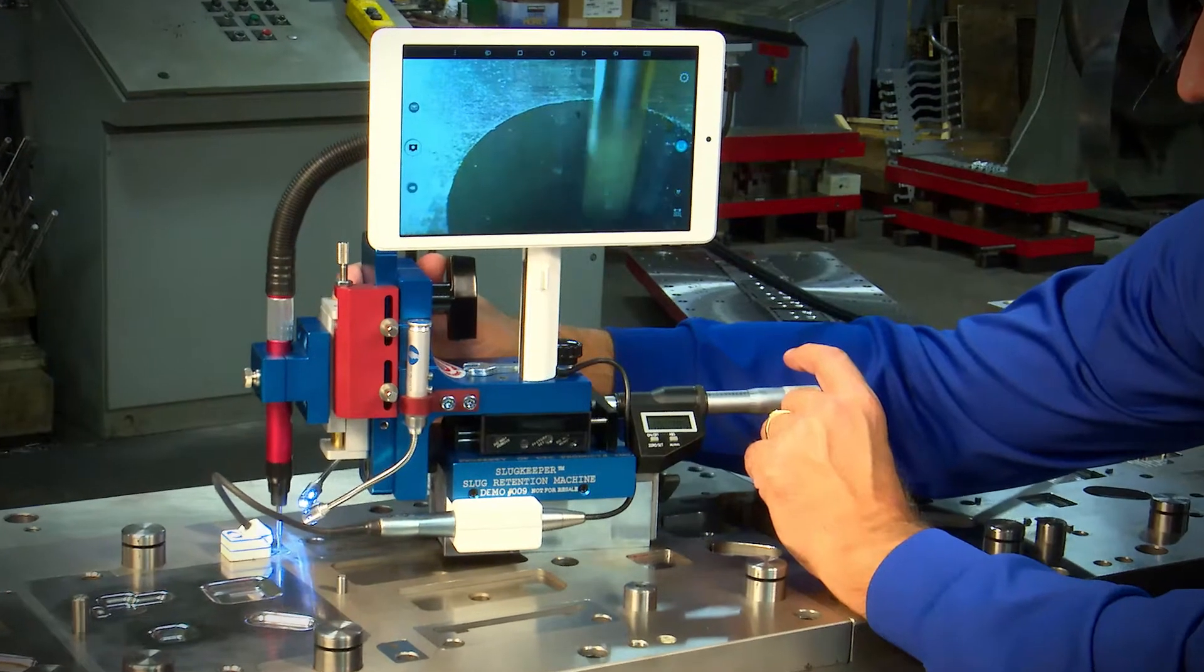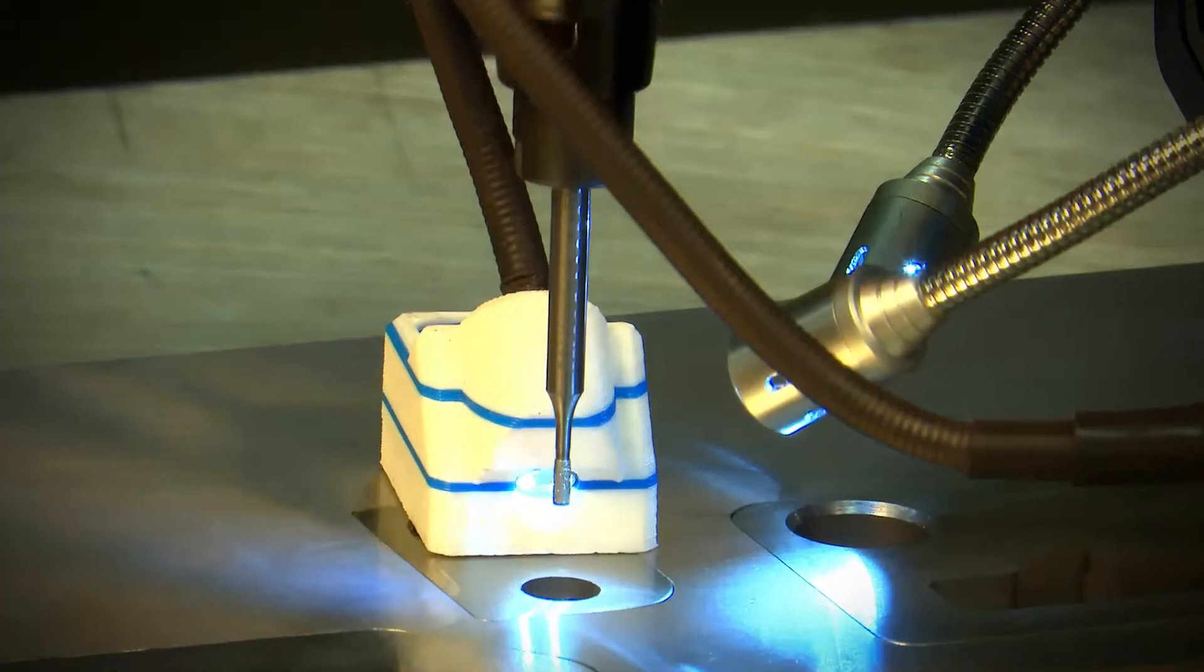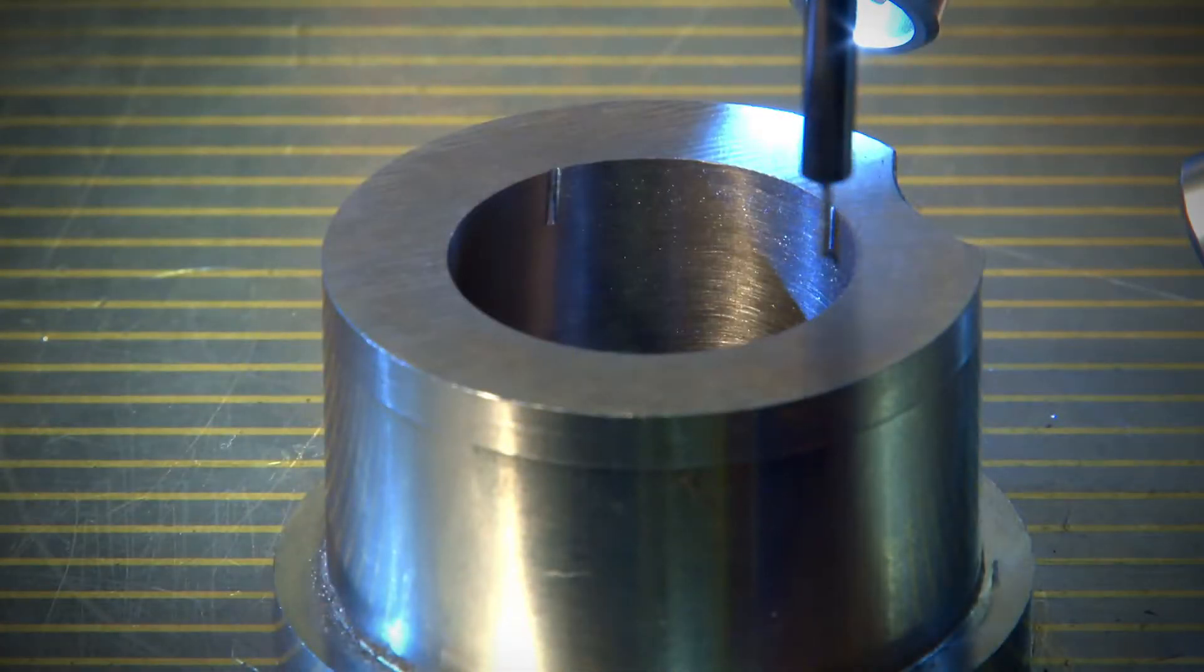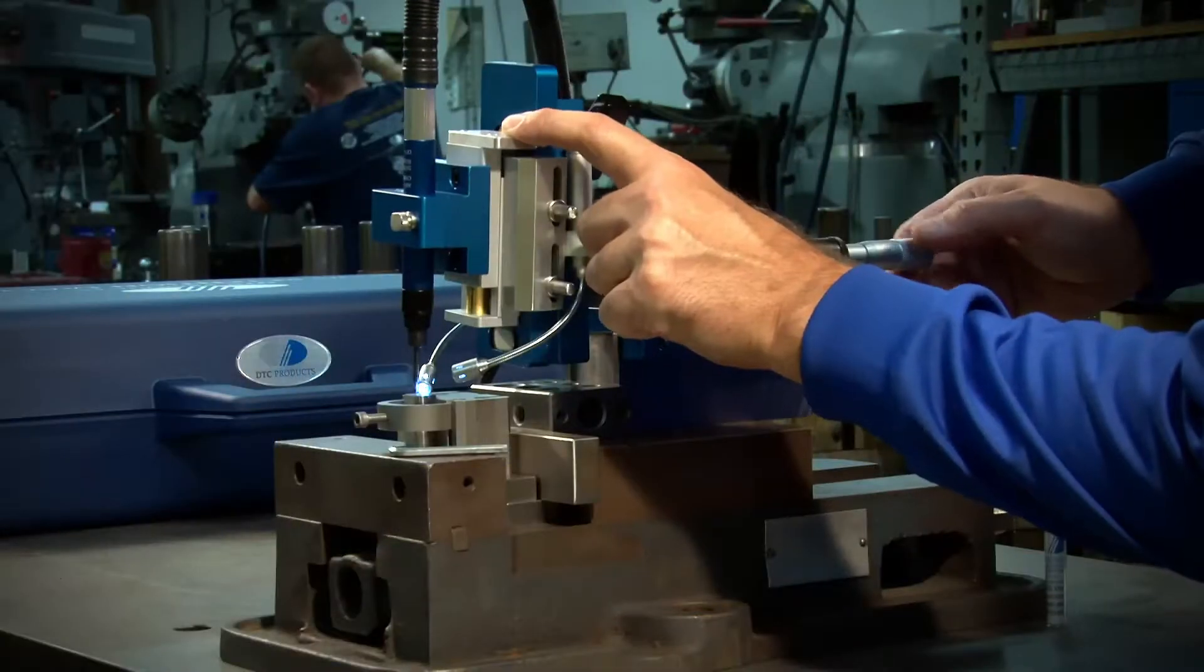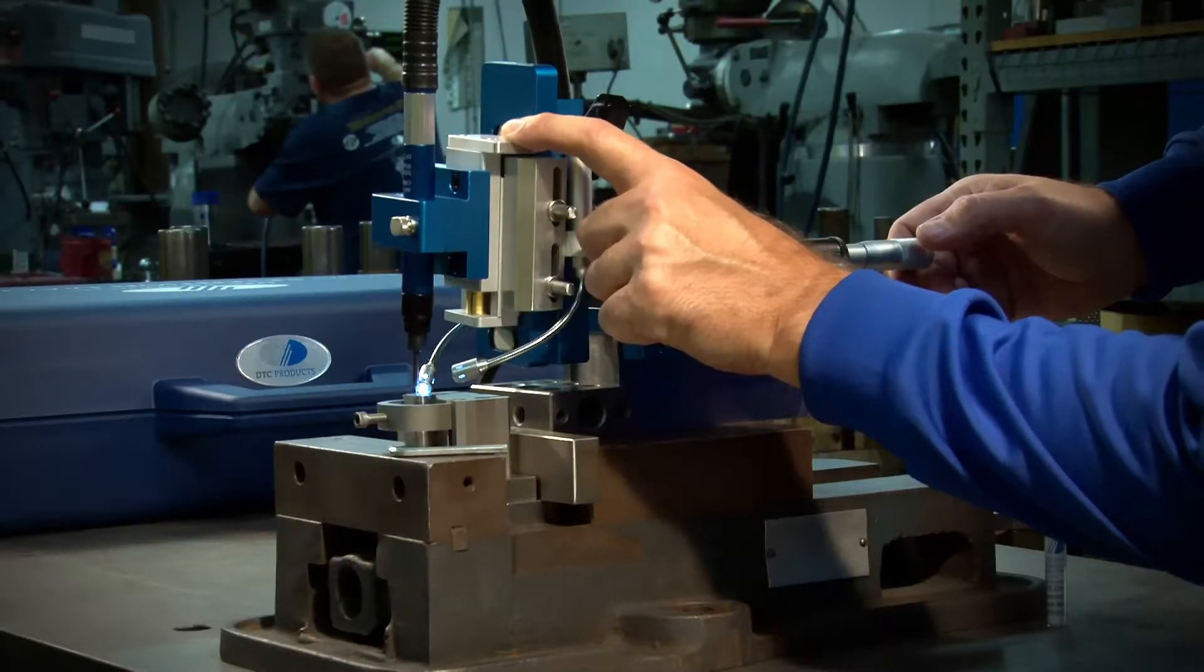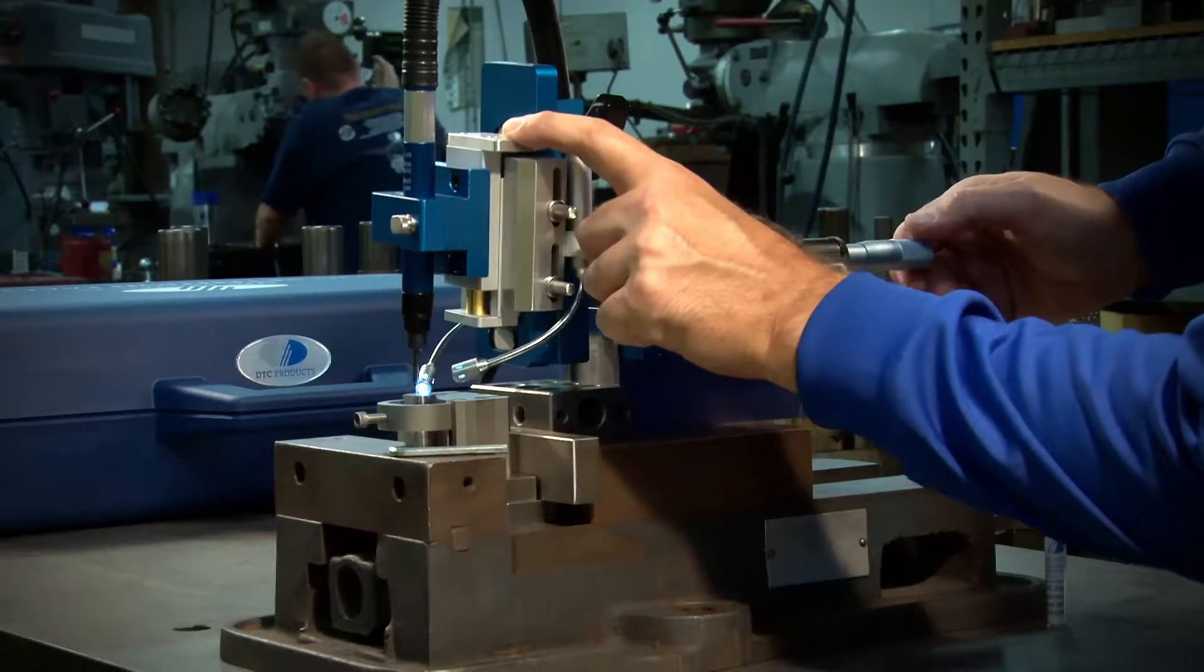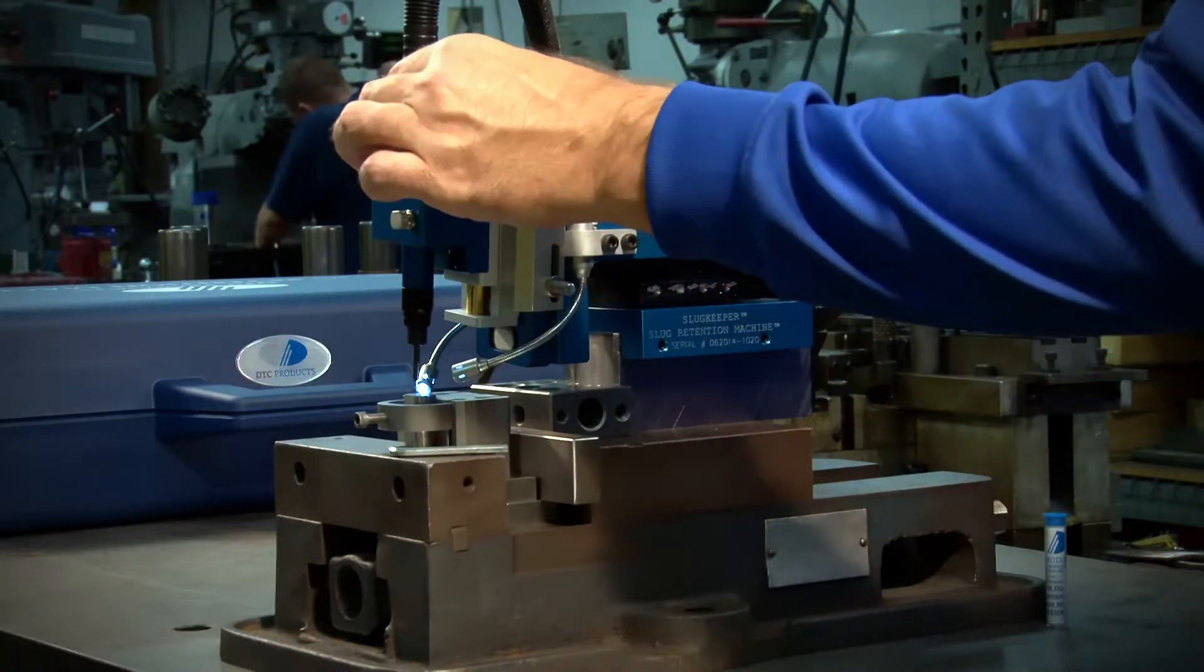The slug keeper can be used on die blocks, die inserts and die bushings in the tool room, as well as on a die while it's in the press. This same amazing machine can also be used to put grooves into guided stripper openings to vent an opening, reducing the section caused by the retraction of the punch.